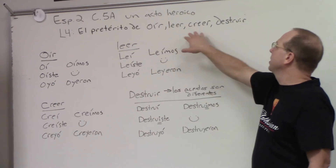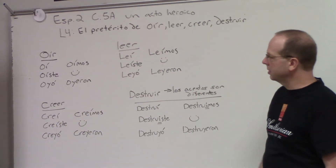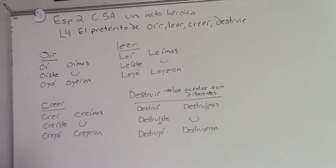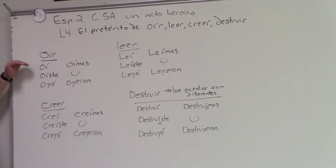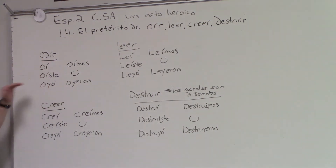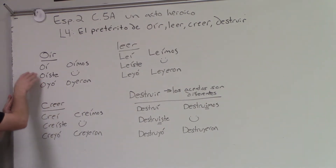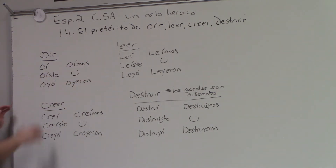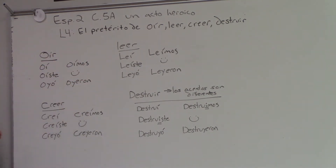Pero leer, creer, destruir — ya saben cómo escribimos estos verbos. Oír, las conjugaciones: oí, oíste, oyó, oímos, oyeron. Oír lleva acento sobre la I en forma de yo, tú, y en forma de nosotros. Y después cambiamos a Y en oyó y oyeron.